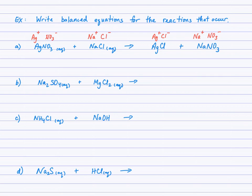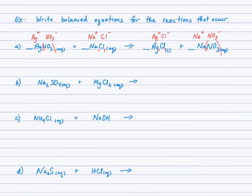Now check the solubility guidelines. Silver chloride is a solid, and anytime you see sodium in a compound or nitrate, you can anticipate aqueous. The last step is to balance. Checking silver: one on each side; one sodium and one sodium; one chloride and one chloride; one nitrate and one nitrate. Everything's balanced.